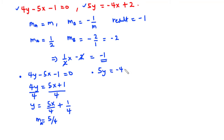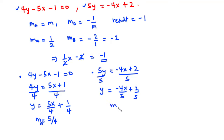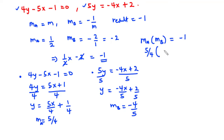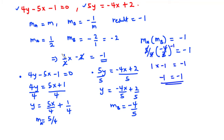For the second equation, 5y equals negative 4x plus 2. We divide through by 5: y equals negative 4x over 5 plus 2 over 5. So the gradient of line B is negative 4 over 5. Now multiplying the two gradients: mA times mB equals 5 over 4 times negative 4 over 5. The 5s cancel and the 4s cancel, leaving negative 1. Hence, these two lines are perpendicular.